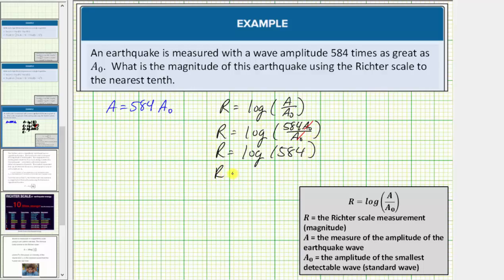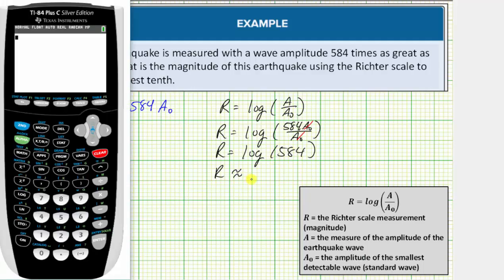And now we'll go to the calculator to get a decimal approximation for this logarithm. The common log key is this button here. So we press log, enter 584, close parenthesis, enter.